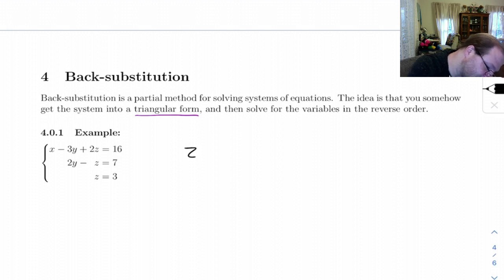What we've got here is z is 3, then we can take that and plug into here. 2y minus 3 equals 7. So let's see, 2y is 10, so that gives me y equals 5.